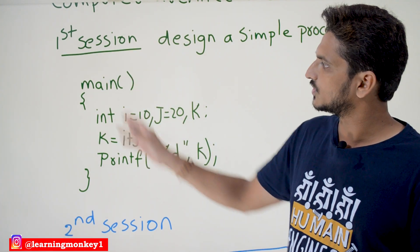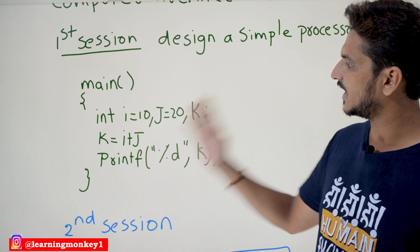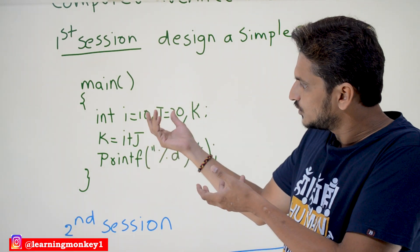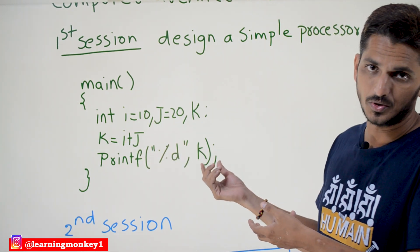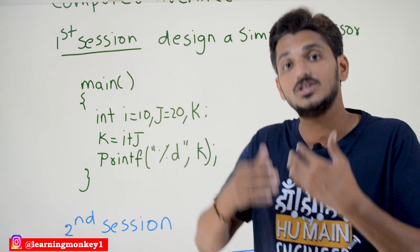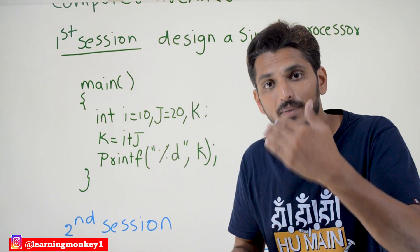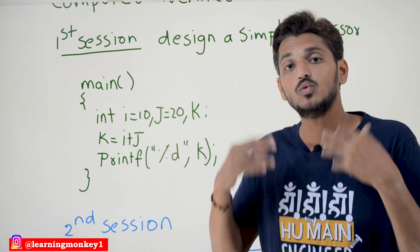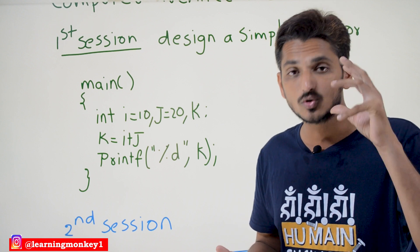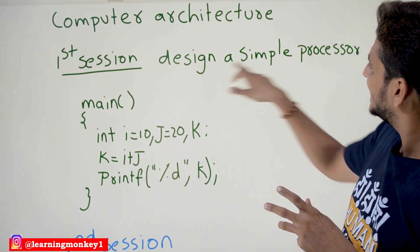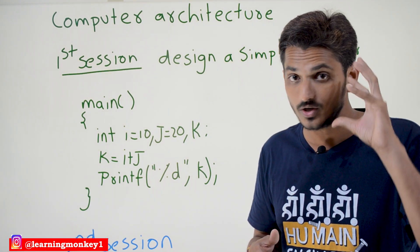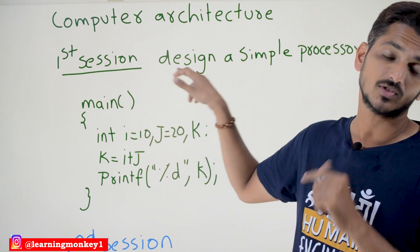Not only that — an important point to understand: consider this high-level C program — main(), int i = 10, j = 20, k = i + j, printf("%d", k). It takes two values, does addition, and displays the output. So how does this high-level language execute in the processor step by step? What are the machine-level instructions and how are they processed? This understanding you get by designing a simple processor and writing instructions to it — that is what you achieve in the first session of computer architecture.